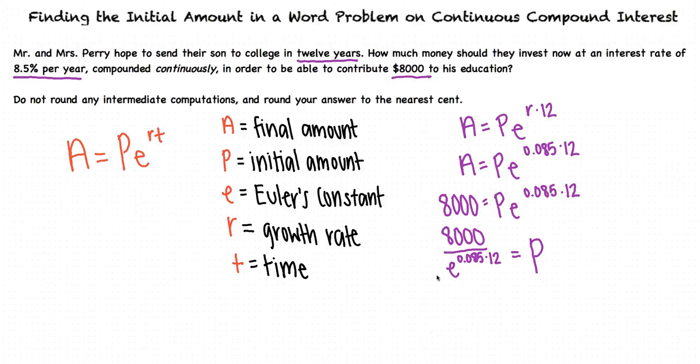Now we can use a calculator to solve for P. The calculator tells us that P equals 2,884 point, a really long decimal. But the problem tells us to round to the nearest cent, so we can round this to 2,884.76.